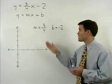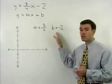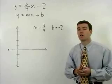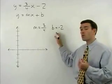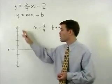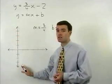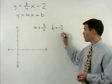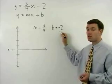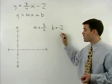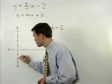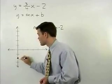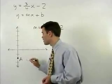To graph a line using its slope and y-intercept, we always start with the y-intercept. Remember, the y-intercept of a line is the point where the line crosses the y-axis. Since our y-intercept is negative two, we start by plotting the point that is down two units on the y-axis, and we call that point A.